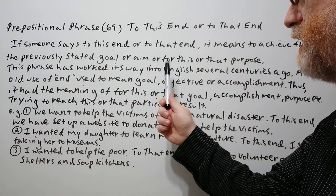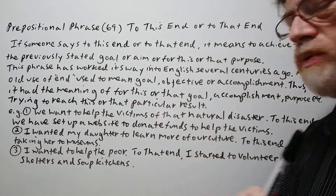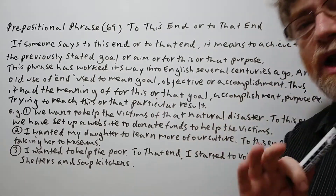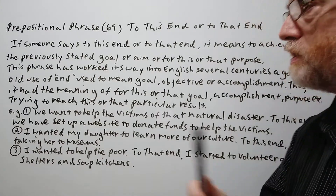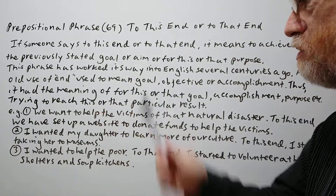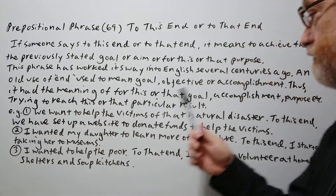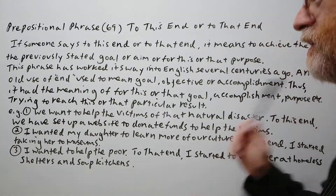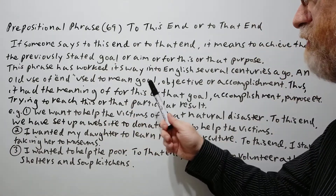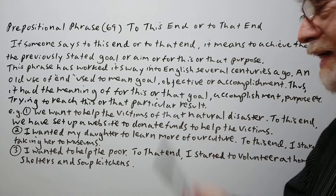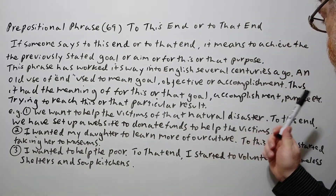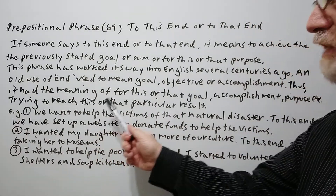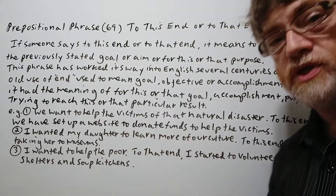The phrase has worked its way into English several centuries ago. An old use of 'end' used to mean goal, objective, or an accomplishment. Thus it had the meaning of 'for this or that goal, accomplishment, purpose,' etc. — trying to reach this or that particular result.